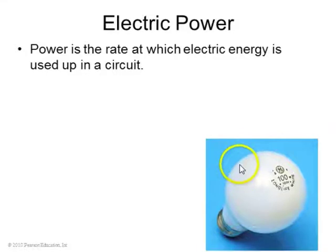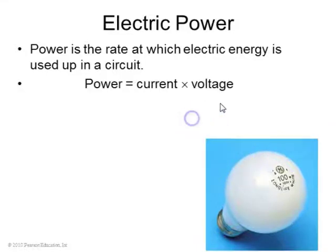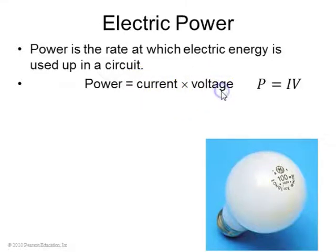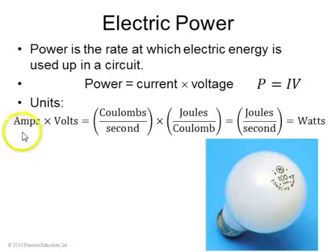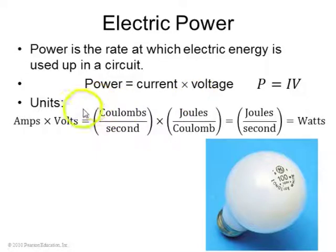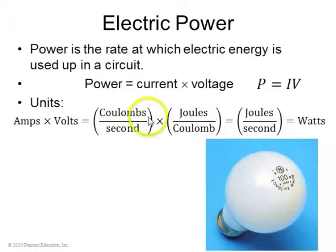Power is the rate at which electricity is used up in a circuit. The equation for power is current times voltage: P equals I times V. The way the units work out: current is measured in amperes, voltage is measured in volts. An amp is a coulomb per second, and a volt is a joule per coulomb. When you multiply, the coulombs cancel and you get joules per second, which is watts.